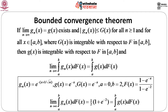According to the Bounded Convergence Theorem, the limit of the integral equals the integral of the limit. If we calculate the integral with g_n(x) = e^{-(x + 1/√n)} and dF(x) as specified, then take the limit, we obtain exactly the same result as computing the integral of g(x) = e^{-x} with respect to dF(x) directly. Since all functions satisfy the conditions of the Bounded Convergence Theorem, this equality holds, and both the left-hand and right-hand sides are confirmed to be equal by direct calculation.